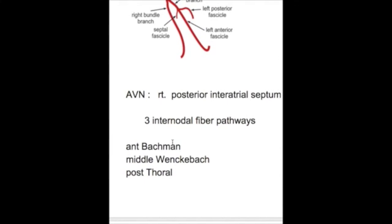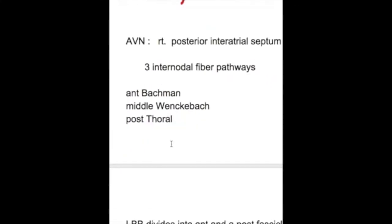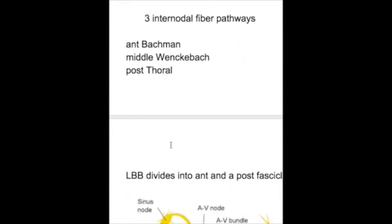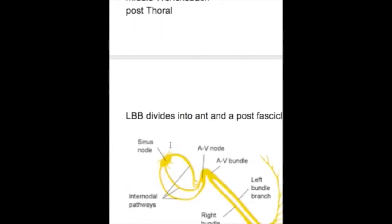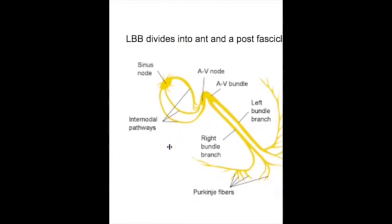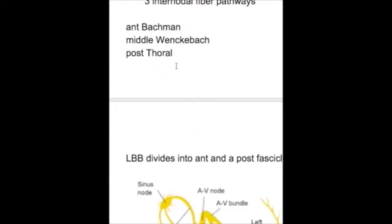The AV node is connected to the SA node by three internodal pathways: the anterior (Bachmann), the middle (Wenckebach), and the posterior (Thorel) pathways.